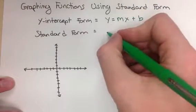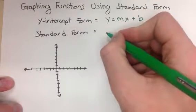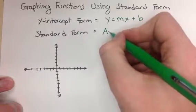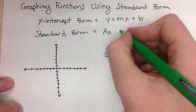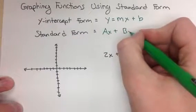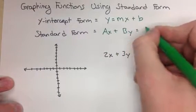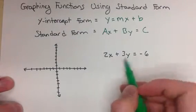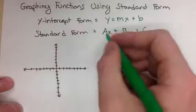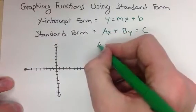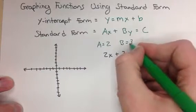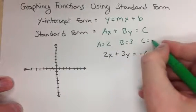Standard form looks a little bit different. It's still an equation of a line, but in this case it's going to be Ax plus By equals C. So as you can see, I have an equation right here. In our case, A is equal to 2, B is equal to 3, and C is equal to negative 6.